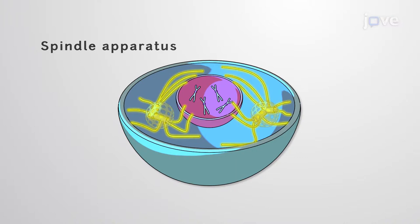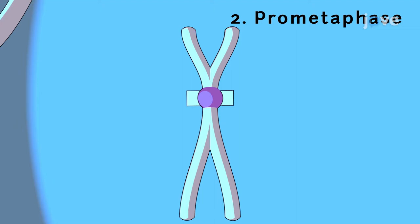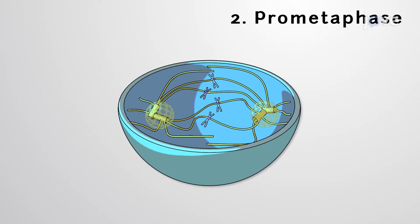Next, the nuclear envelope dissolves during prometaphase, exposing the chromosomes to the cell's other contents. Protein structures also appear on both sides of the centromeres, one for every chromatid. Once these kinetochores form, extending interior microtubules fasten to them, with each sister chromatid being tethered to a different cell pole.